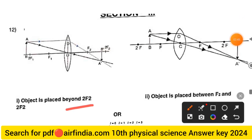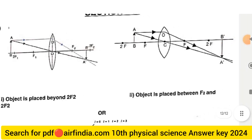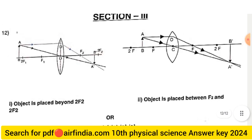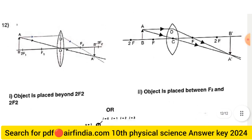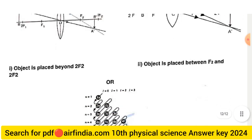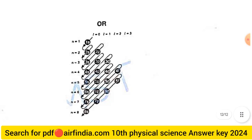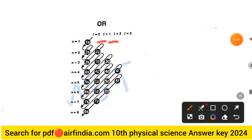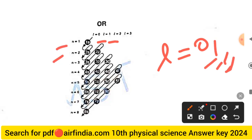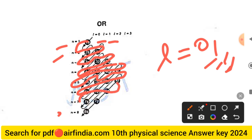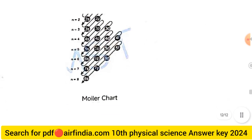Section 3, Question 12 answer: Draw the ray diagram for a convex lens when the object is placed beyond 2F and when placed between F and 2F. For the optional question 12B — the Moeller chart diagram: l = 0, l = 1, l = 2, l = 3 (s, p, d, f orbitals). The orbital filling order by (n+l) rule goes: 1s, 2s, 2p, 3s, 3p, 3d, 4s, 4p, 4d, 4f, 5s, 5p, 5d, 6s, 6p, 6d, 7s, 7p, 8s.